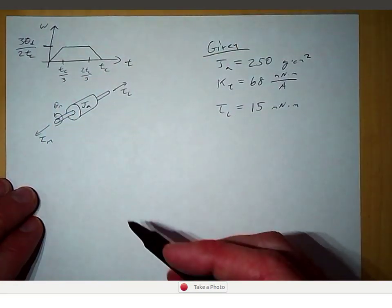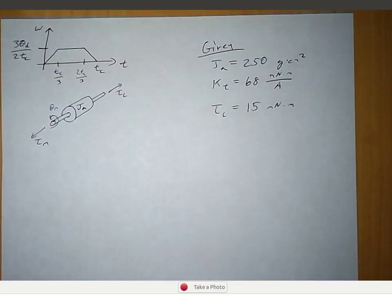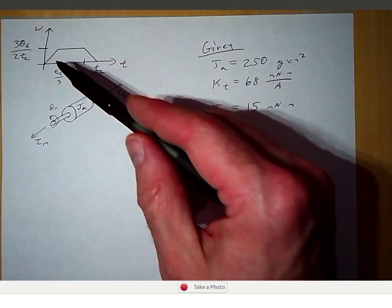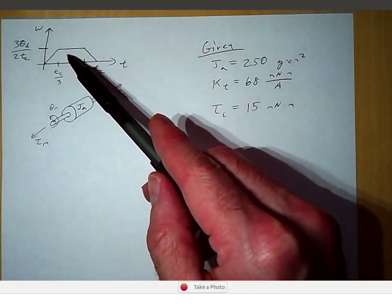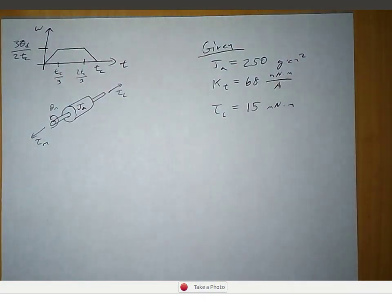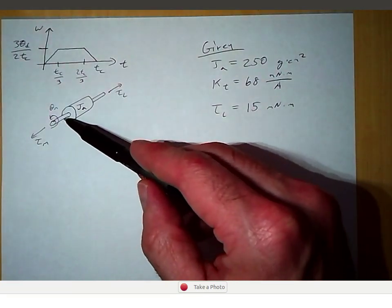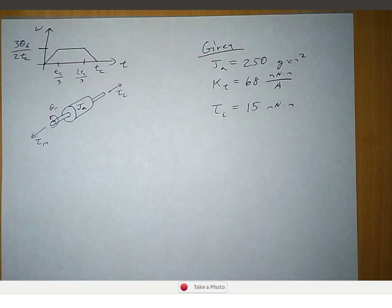The direction of the motor torque is generating a positive displacement theta_m. This video goes over an example problem where we want to find the maximum velocity and the torque required in each of the three segments to get the desired motion. We are also going to calculate the maximum current required by the motor.